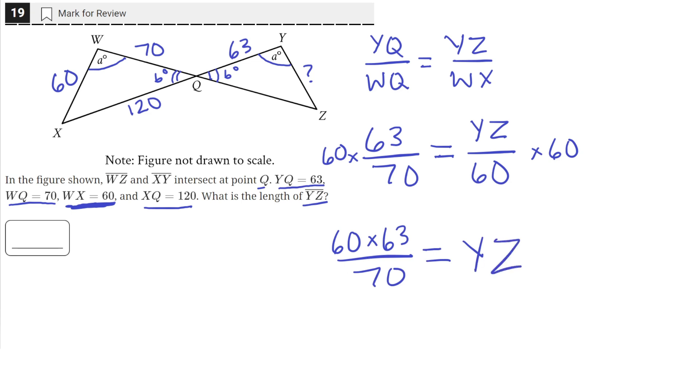If we put that into our calculator, 60 times 63 equals 3780, and that divided by 70 equals 54. So YZ equals 54.